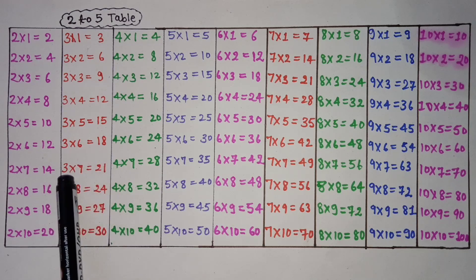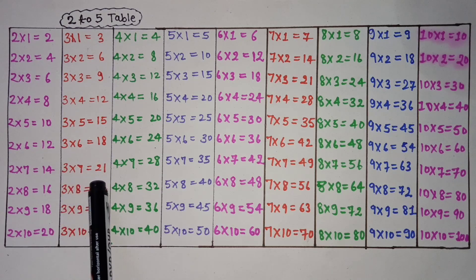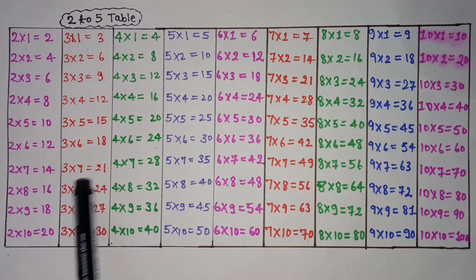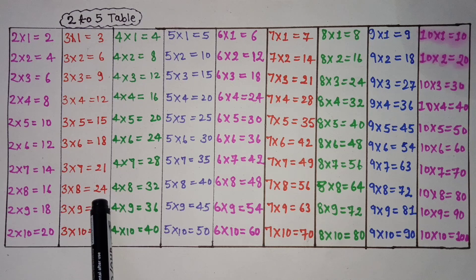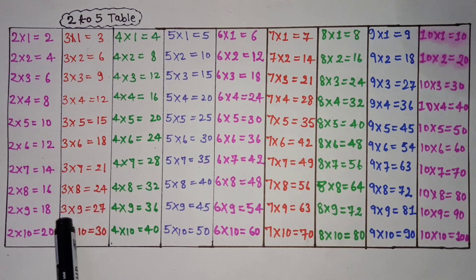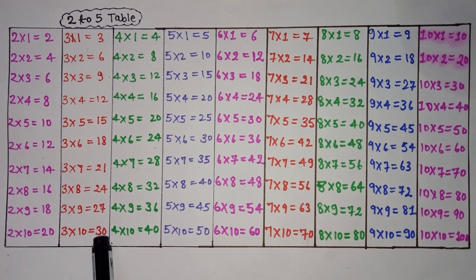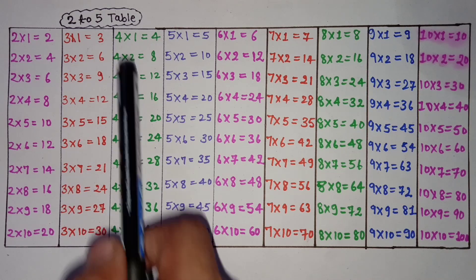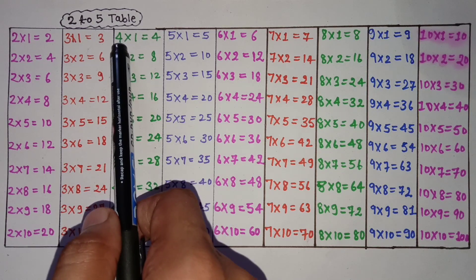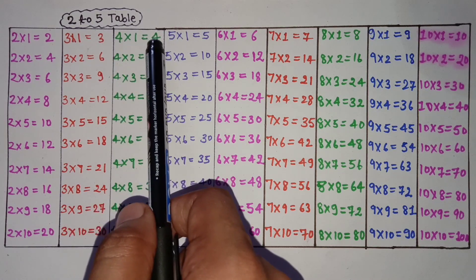3 7 is 21, 3 8 is 24, 3 9 is 27, 3 10 is 30. 4 1 is 4.